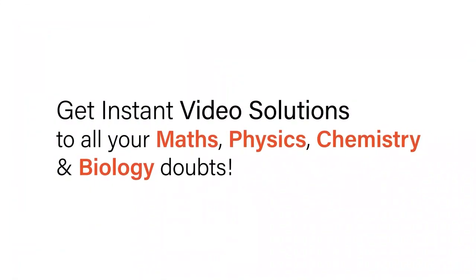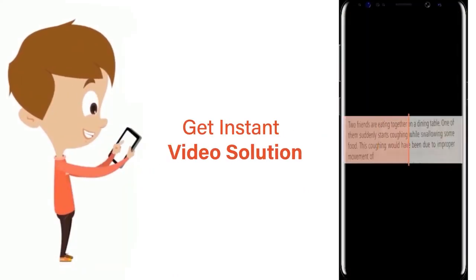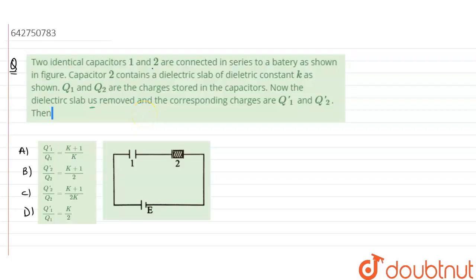With Doubtnet, get instant video solutions to all your maths, physics, chemistry, and biology doubts. Just click the image of the question, crop the question, and get instant video solution. Download Doubtnet app today. Two identical capacitors 1 and 2 are connected in series to a battery as shown.